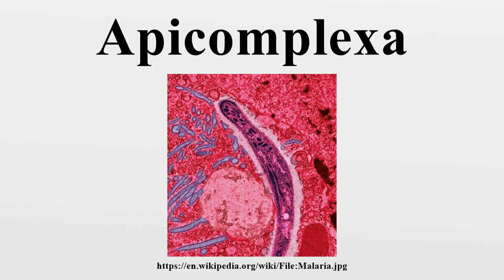Perkinsus, while once considered a member of the Apicomplexa, has been moved to a new phylum. The gregarines are generally parasites of annelids, arthropods, and molluscs. They are often found in the guts of their hosts but may invade other tissues. In the typical gregarine life cycle, a trophozoite develops within a host cell into a schizont, which then divides into a number of merozoites by schizogony. The merozoites are released by lysing the host cell, which in turn invade other cells. At some point, gametocytes are formed, released by lysis of the host cells, and group together. Each gametocyte forms multiple gametes. The gametes fuse to form oocysts, which leave the host to be taken up by a new host.